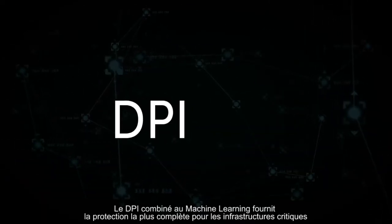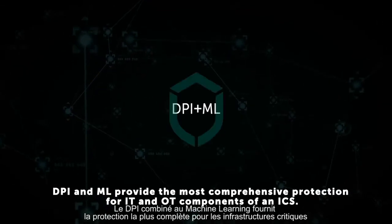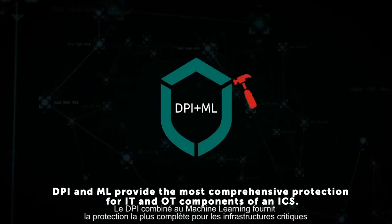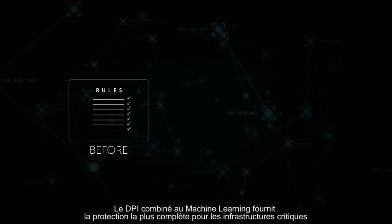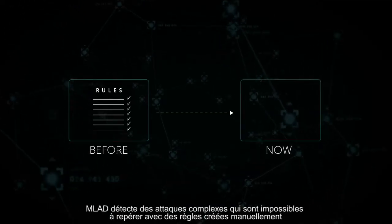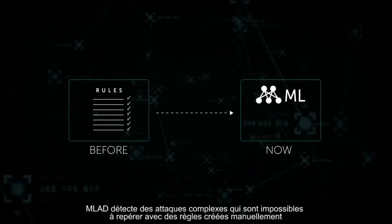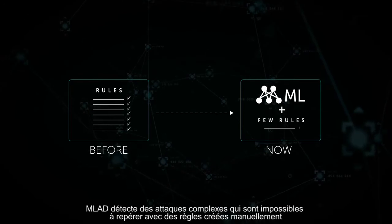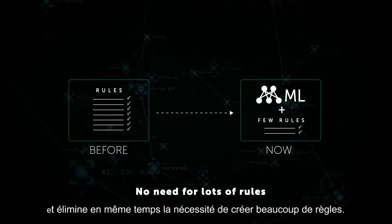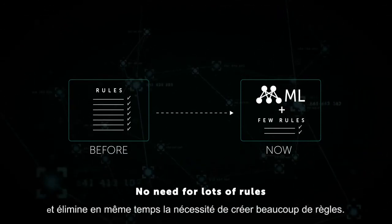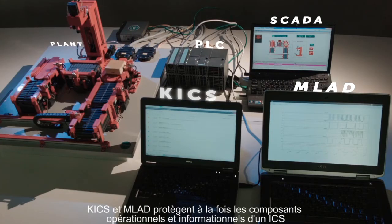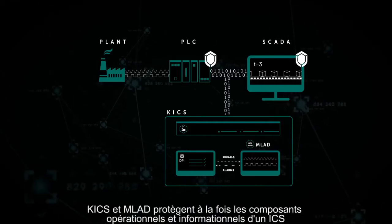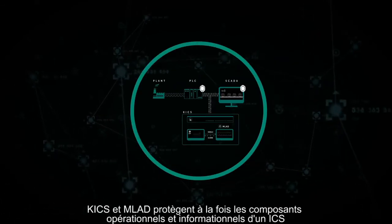DPI, in combination with machine learning, provides the most comprehensive protection for critical infrastructure. MLAD detects complex attacks that are impossible to counter with manually created rules, and eliminates the need for lots of rules. KICS and MLAD protect both the operational and informational components of an ICS.